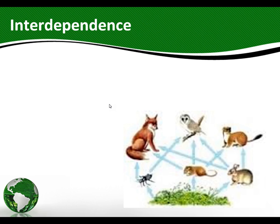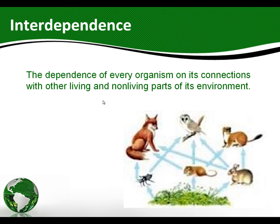Not just in food webs like shown here, but in all sorts of ways. The activities of humans impact other organisms. Other organisms depend on each other for food and other sorts of relationships, which is what this section is all about.